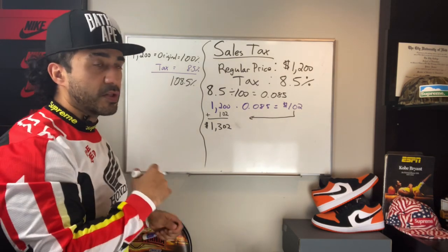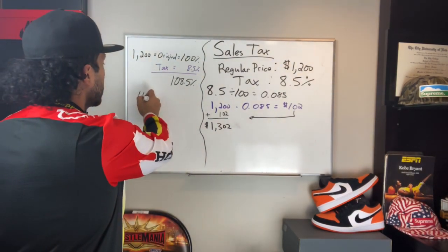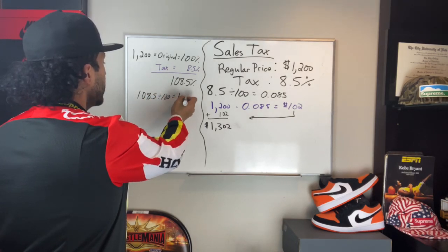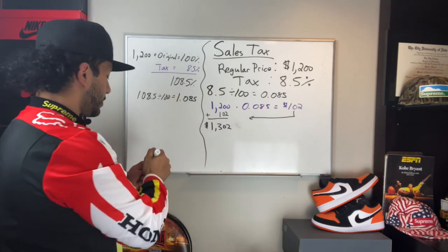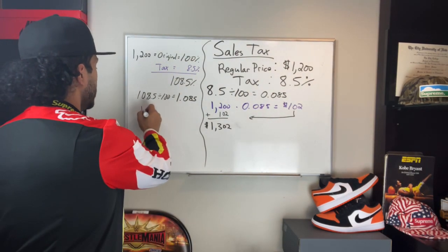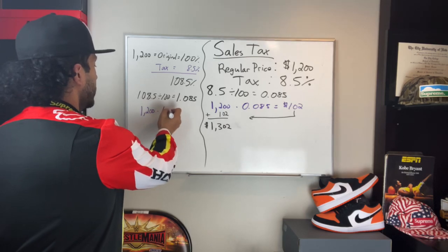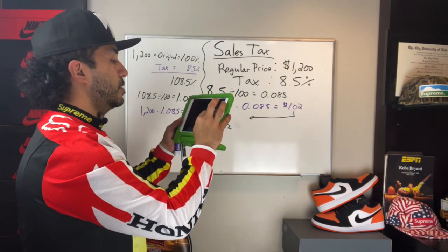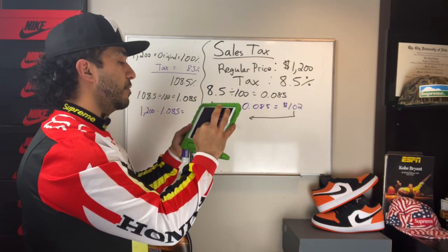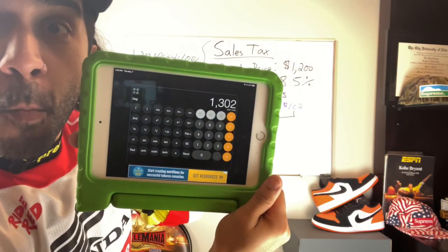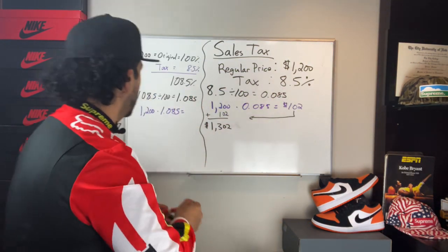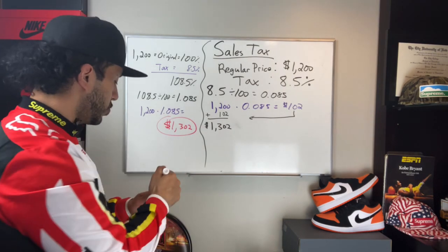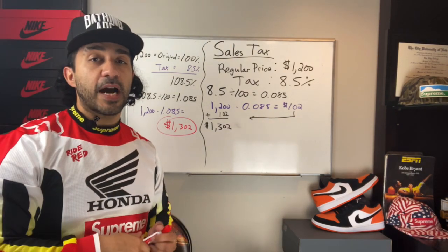Let's see if that works. We're still going to take 108.5 and divide it by 100, which gives us 1.085. And we're going to multiply that by 1,200. 1,200 times 1.085 equals $1,302 again. Two different ways to look at it — both ways get you the answer. It really comes down to whatever you feel the most comfortable with. That is how we calculate sales tax.